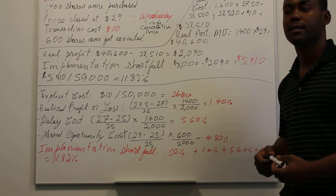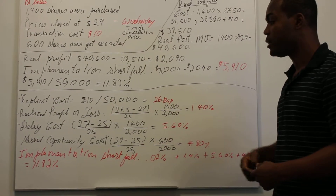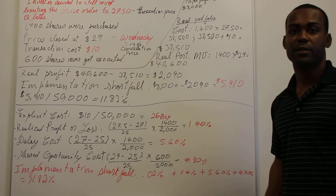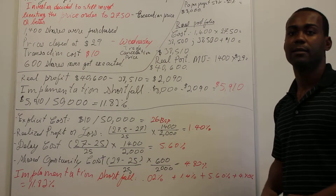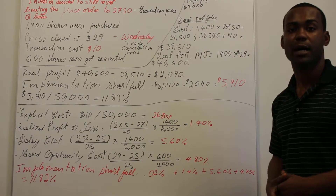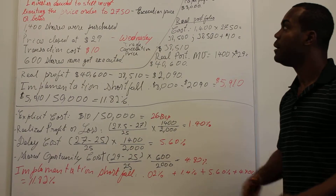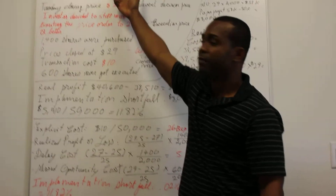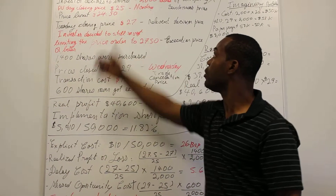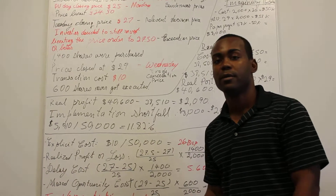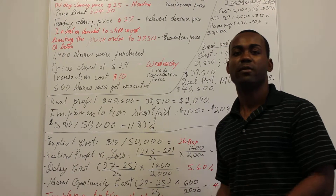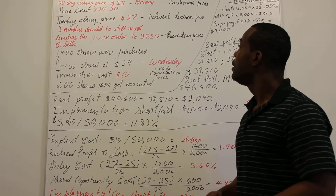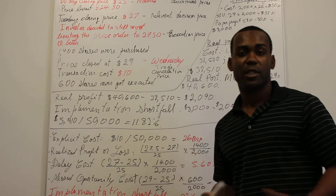This total cost reflects what it took to execute this trade. Because this investor did not execute the trade on time — when he had an opportunity to buy at $25 — he incurred significant additional costs by trying to get a more aggressive price. These are the important considerations when placing a trade, and that is implementation shortfall.